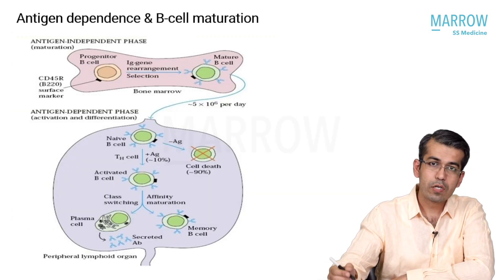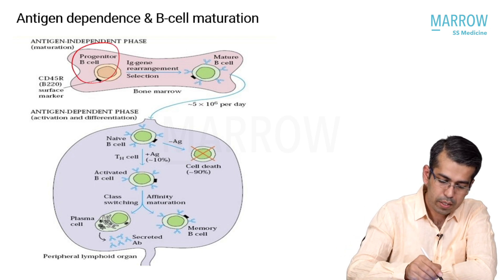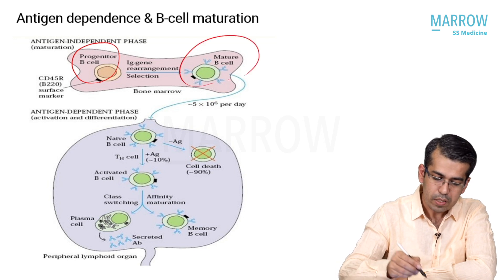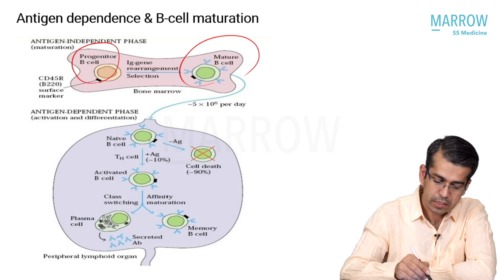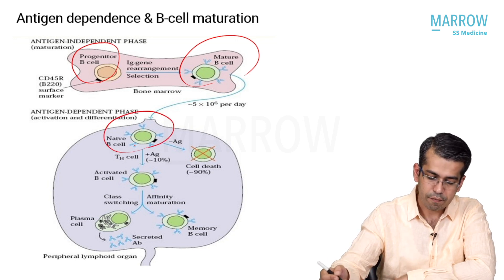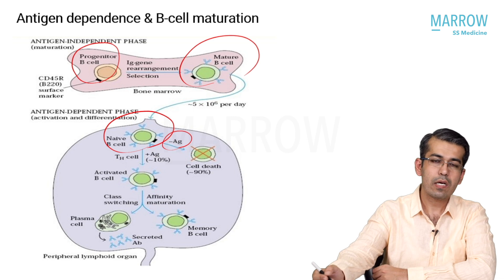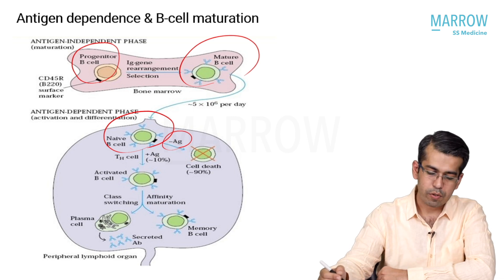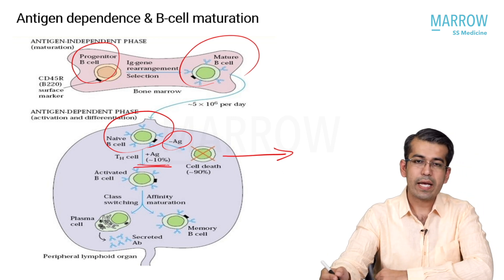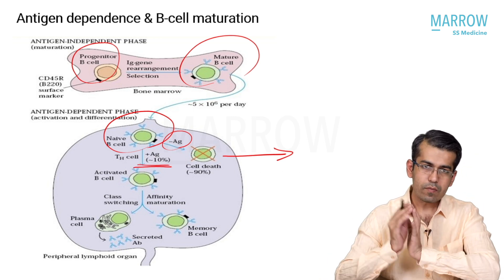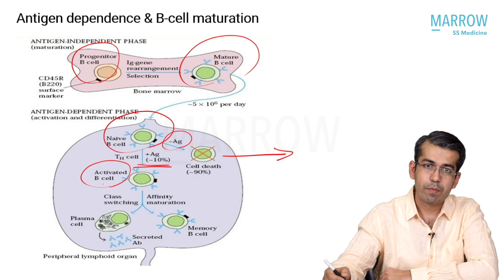When it comes to B cell maturation with respect to antigen dependence, in the bone marrow the progenitor B cells become naive B cells as they exit. Once they enter the lymph nodes, those not exposed to antigen, or those exposed but not mounting any immune response, die and are sacrificed. Only the 10% who actually get exposed to the antigen and mount an immune response are selected - these are called activated B cells.